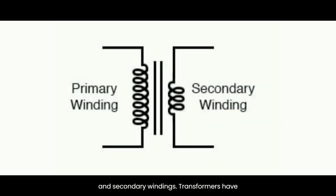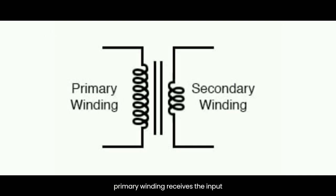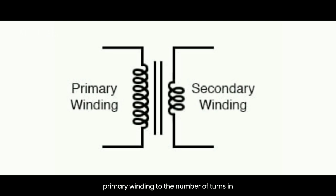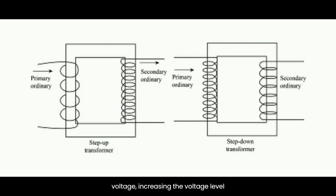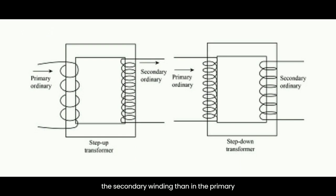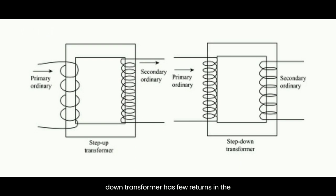Transformers have two sets of windings: the primary winding, which receives the input voltage, and the secondary winding, which delivers the output voltage. The ratio of the number of turns in the secondary winding to the primary winding determines the voltage transformation ratio. Transformers can either step up the voltage (increasing the voltage level) or step it down (decreasing the voltage level). A step-up transformer has more turns in the secondary winding, resulting in an increased output voltage; a step-down transformer has fewer turns in the secondary winding, leading to a decreased output voltage.